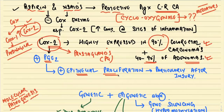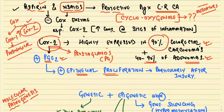COX-2 is the enzyme increased whenever there is pathology or inflammation, and it has a role in causation of colorectal carcinoma via synthesis of prostaglandin E2, causing epithelial proliferation, particularly after injury. From pharmacology, we know NSAIDs — including aspirin — are potent inhibitors of the COX enzyme, especially COX-2, which is seen only at the site of inflammation. This is how aspirin and NSAIDs provide protection against colorectal carcinoma.